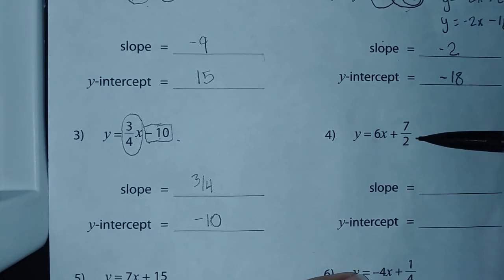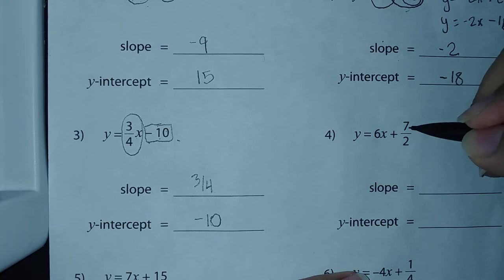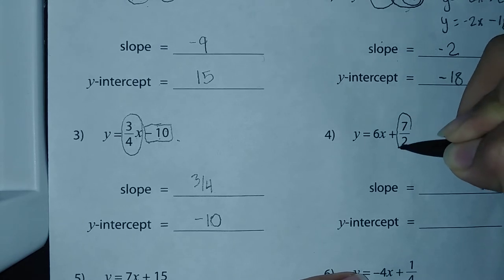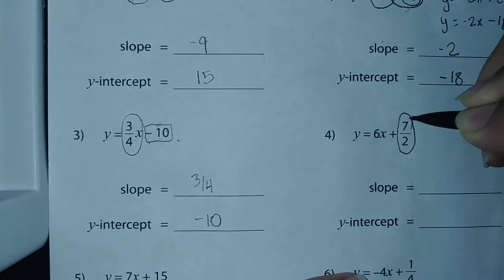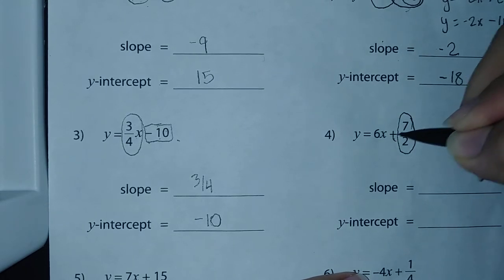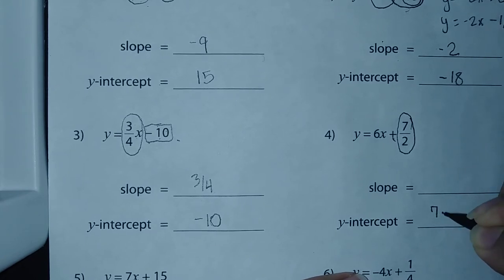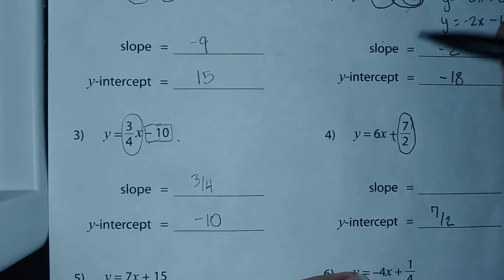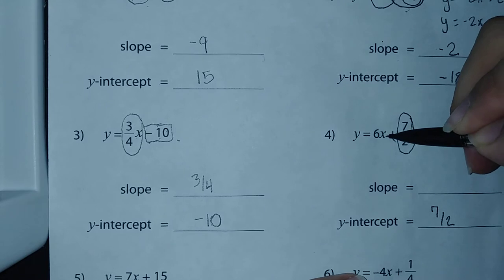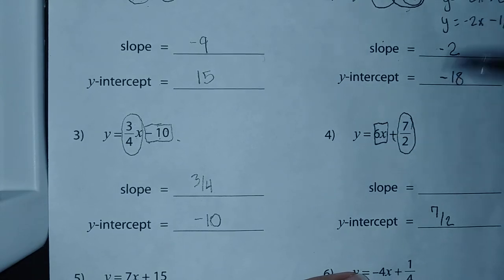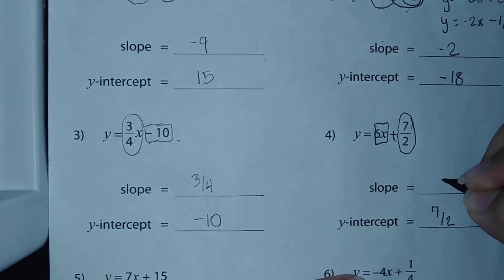Number four: y = 6x + 7/2. This time our y-intercept is positive because of the plus sign, so our y-intercept is 7/2. Then we have 6x, so our slope is just 6.